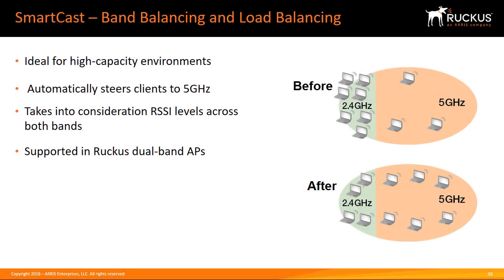SmartCast employs sophisticated load balancing and band balancing techniques to enable clients to efficiently use AP and spectrum resources. This is ideal for high-density client environments such as auditoriums, conference halls, and public venues where many users try to concurrently connect to the wireless LAN. Band balancing spreads client devices across available bands, while load balancing spreads the load across available access points.